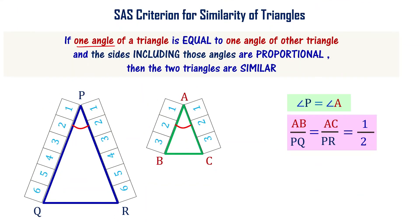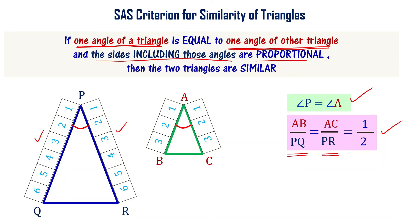One of the angles of triangle PQR is equal to one of the angles of triangle ABC — that is, angle P equals angle A. And the two sides including those angles are proportional: AB by PQ equals AC by PR. By the SAS criterion for similarity of triangles, the two triangles are similar. You don't need to check the rest of the conditions.